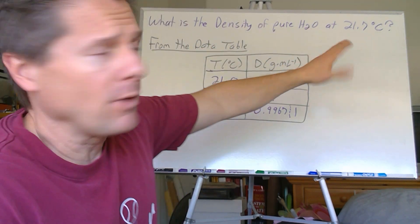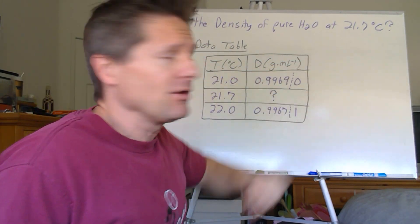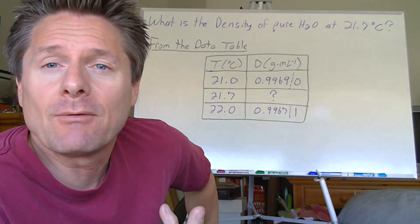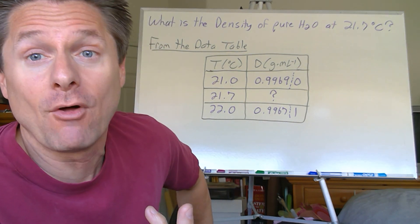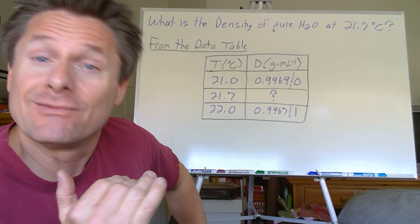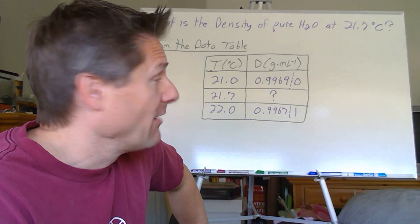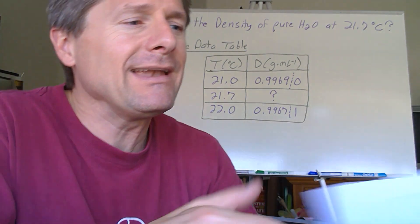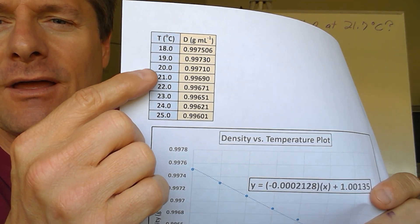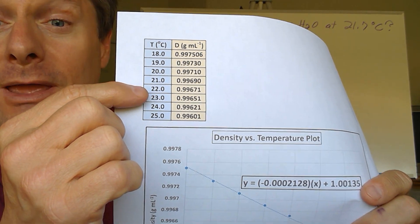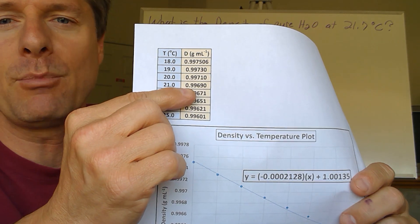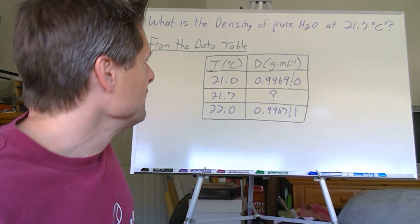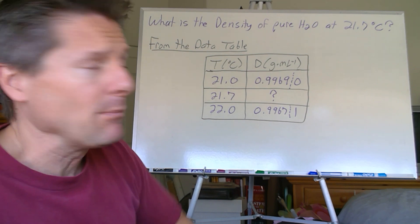What I'll do is I'll write 21.0 and 22.0 up on the board and show you how we can actually derive an equation to solve for our temperature at 21.7. But I'm going to forget that. So I'm going to write that over here. So let's say we do that. So I'll put the data on the board and we'll solve for 21.7. And I'll show you how to do it. Be right back. All right. Let's say we have a lab where we measure, we got some pure water. We measure the temperature at 21.7 degrees Celsius with our thermometer. And we need to know the density.